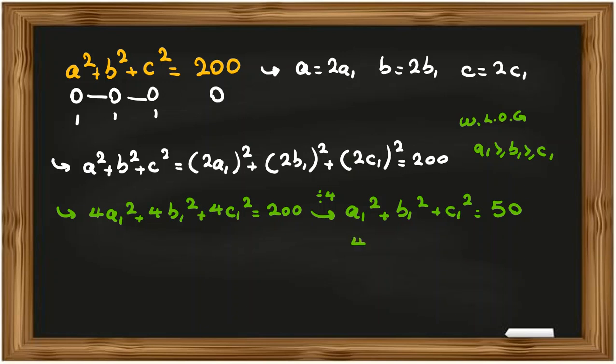So, first we say, for example, it is 49 the greatest one for a1, because 8 squared is 64 greater than 50. 49, it will be 1, 0, 1 answer. If it is 36, 6 squared, then b1 squared plus c1 squared is 14. For 14, 9 plus 5 is not good, and 4 plus, it's not possible. So, 36 is not possible. We can erase it.